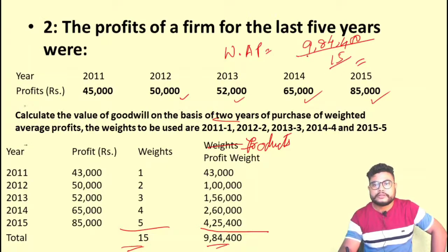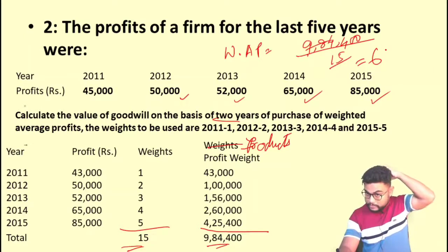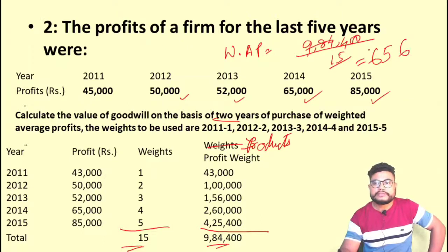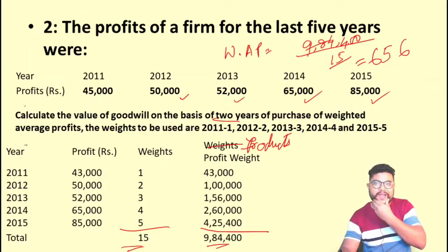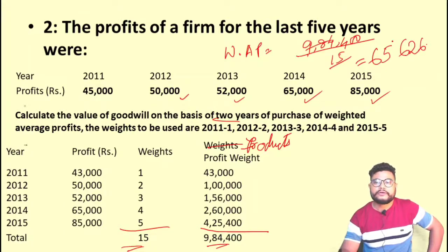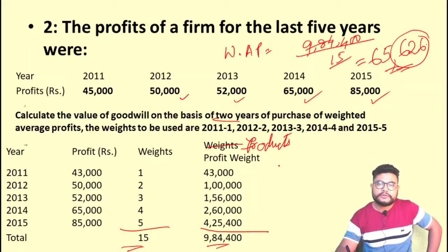Multiply each year's profit by its assigned weight to get the product, then total the products and total the weights. Total products came to 9,84,400 and total weights = 15. Weighted Average Profit = 9,84,400 ÷ 15 ≈ 65,626.